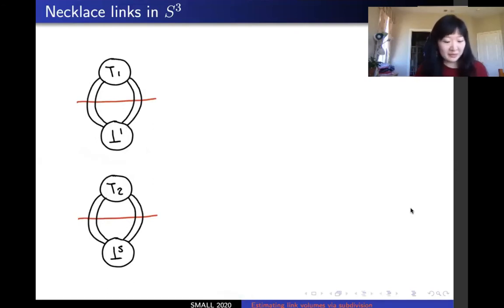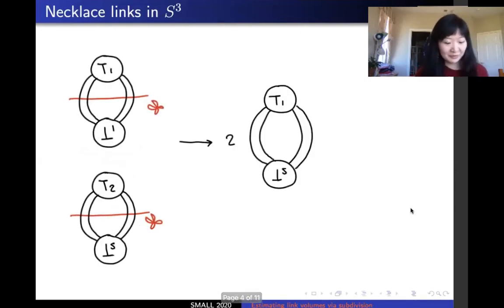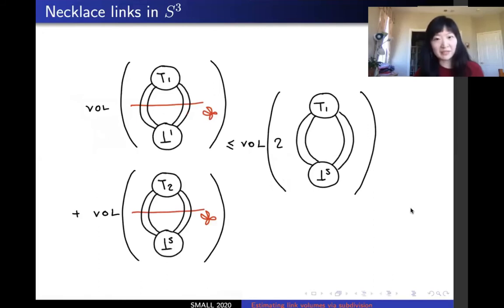Say we had another one of these made from a different tangle. By the Agol-Storm-Thurston theorem, we can cut at these reflection surfaces and glue the pieces back up. We know that the volume of the result will go up or stay the same. In our example, we can place a cut down the middle of the necklace with a tangle T1 and its reflection, place another cut in the necklace with a T2 tangle and its reflection, and glue the four pieces back up to get two copies of a necklace with a T1 bead and a T2 bead. Then the volume of the T1 T2 necklace is greater or equal to the volume of the T1 bead plus the volume of the T2 bead.